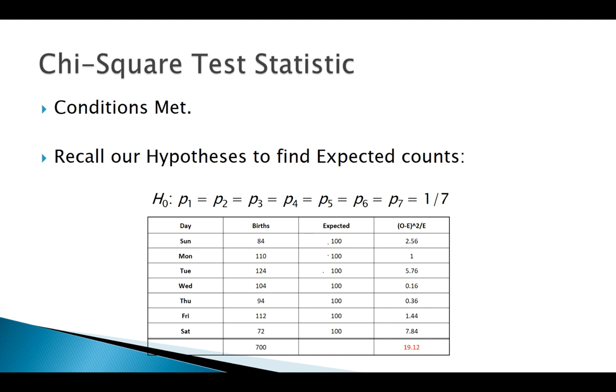To calculate my test statistic, I take my observed, in this case 84, minus 100 squared over 100, and it gives me 2.56. I do that all the way down the list and then sum it all up to get my test statistic 19.12.